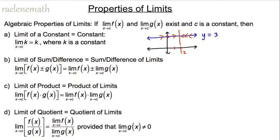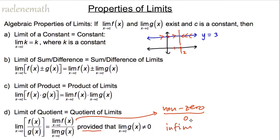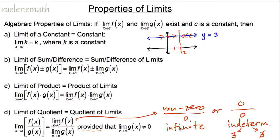The fourth property says that the limit of a quotient is equal to the quotient of the two individual limits, provided the denominator is non-zero. If the denominator is zero, we end up with either non-zero over zero — which is an infinite value, meaning the limit does not exist — or zero over zero, which is indeterminate, and we don't know yet if the limit exists. This indeterminate case corresponds to the hole situation discussed earlier.